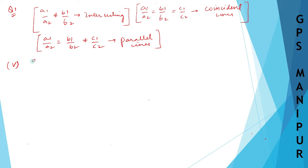The question is: 3/2 x plus 5/3 y equals 7, and 9x plus 10y equals 14.